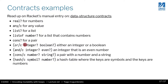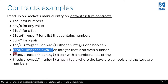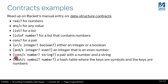Then there are combinators — notice the /c for contract. You can say that a value is either an integer or a boolean, or that it's an integer and the integer has to be even. Checking if a number is even is not something very easy that a compiler can do, but because we're doing it dynamically at runtime, you can be very expressive. That is one of the benefits of having this system versus a compiler.